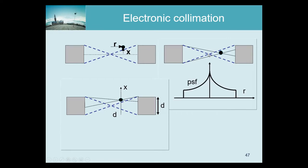If we move this point source away from the center towards the detector, the bottleneck becomes the near detector. Any photon that hits this detector will also hit the far detector, but not the other way around. So the sensitivity decreases with the square of the distance from the point source to the bottleneck detector. Going from the center to the edge doubles the distance, so if we have a value of 1 in the center, we get 0.25 at the edge — the sensitivity decreases quadratically.